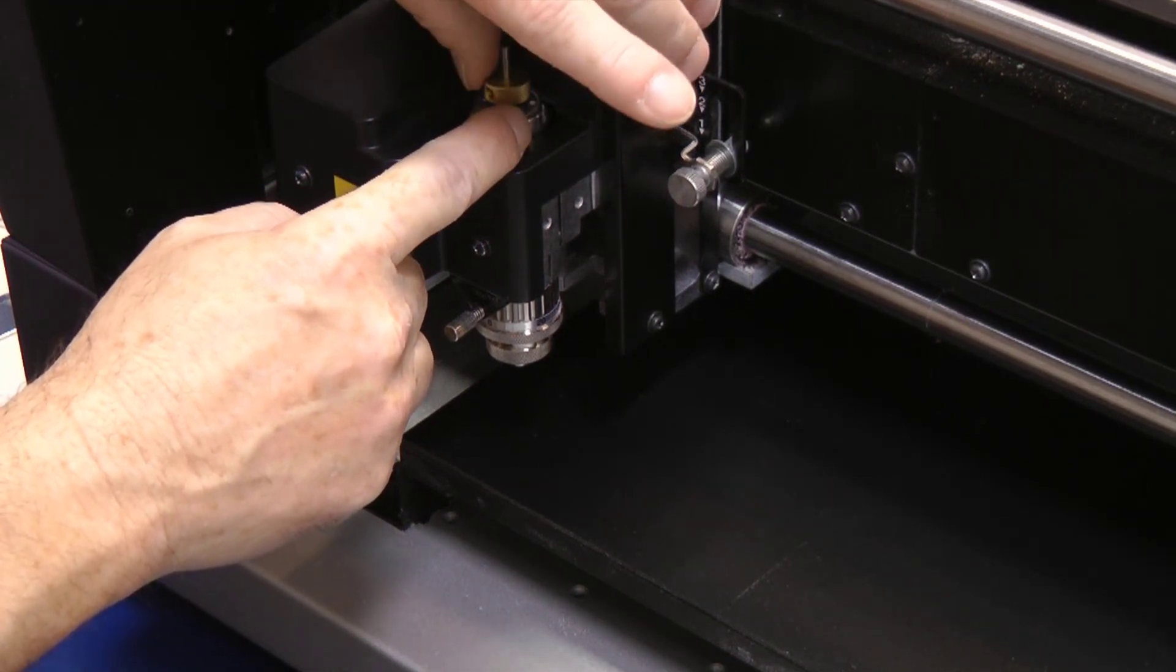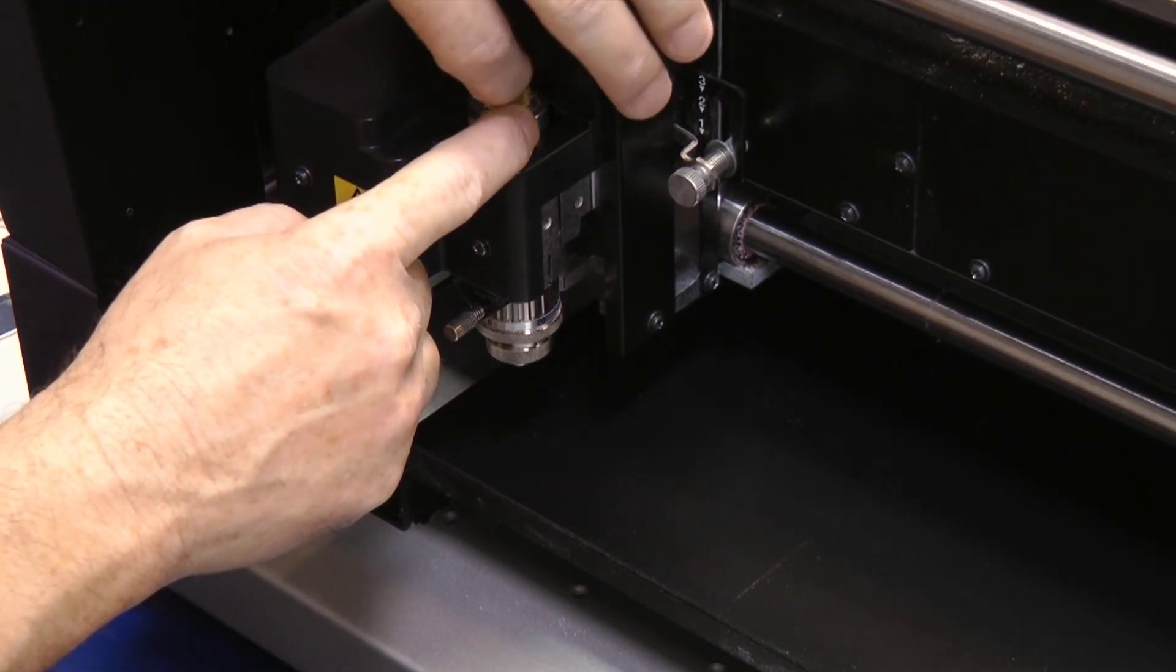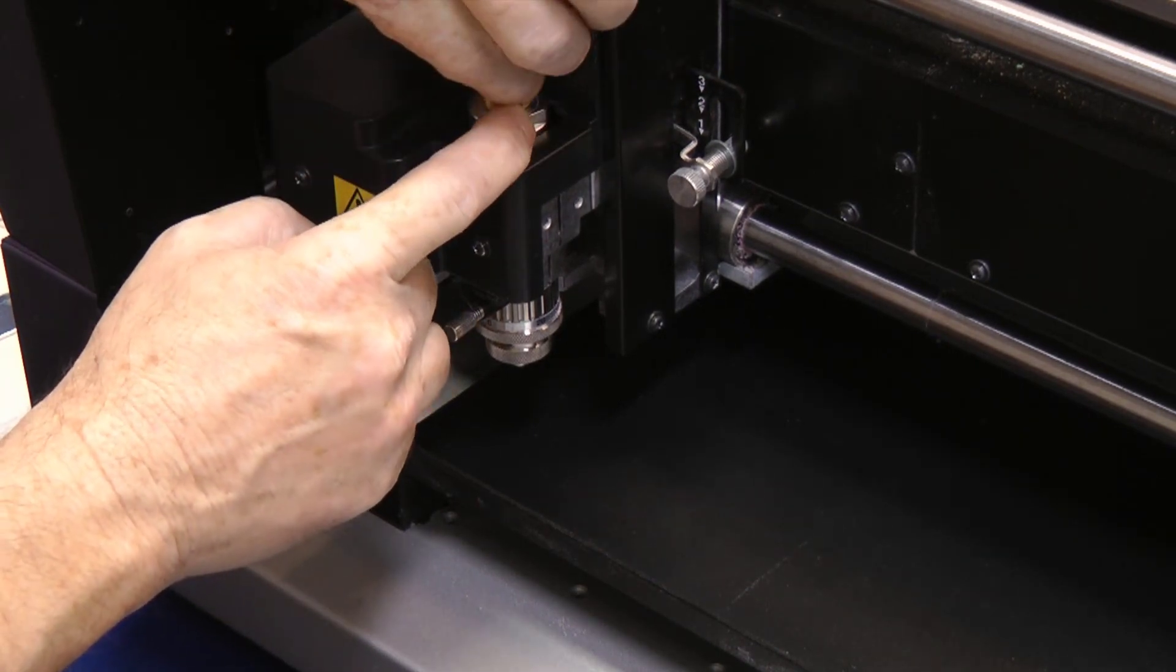Place it in the spindle and turn counterclockwise until tight. Give it a good firm twist. Make sure it's in there snugly.